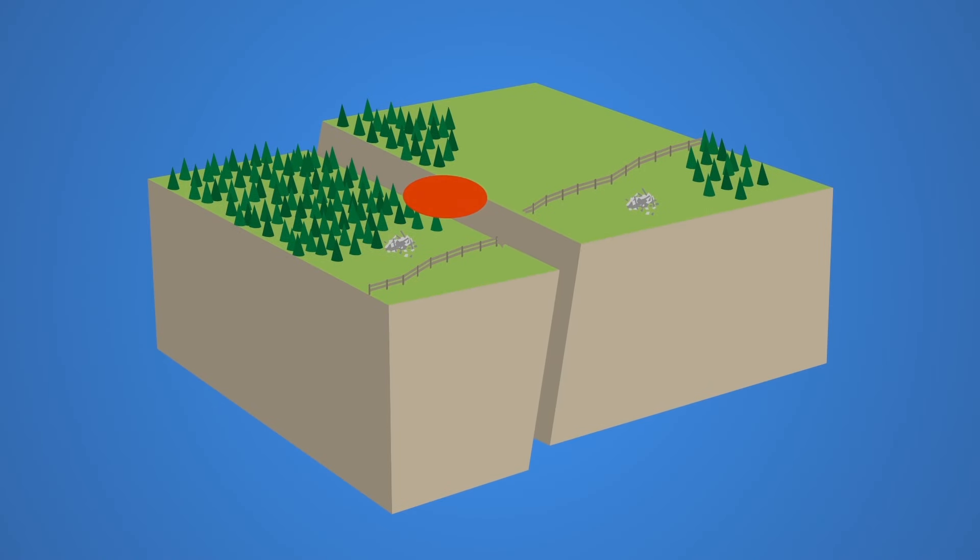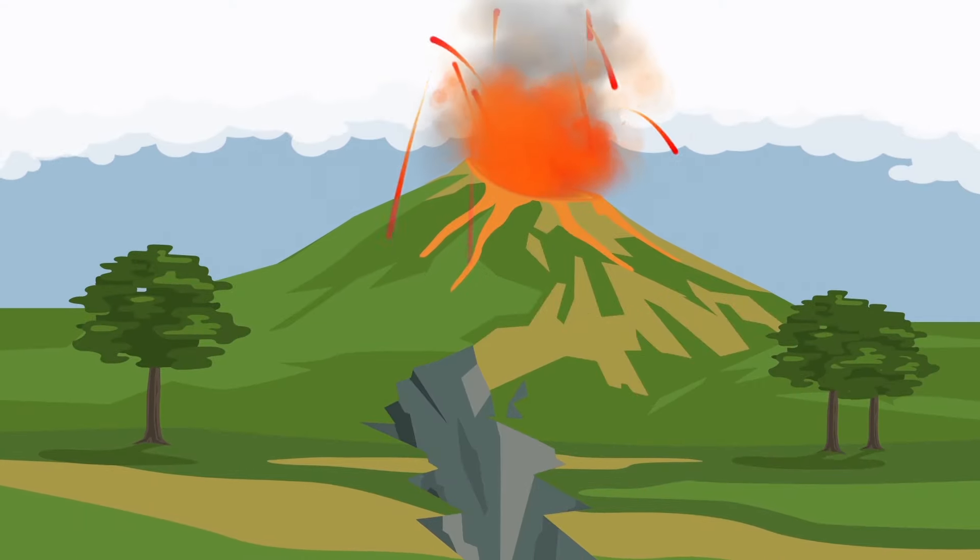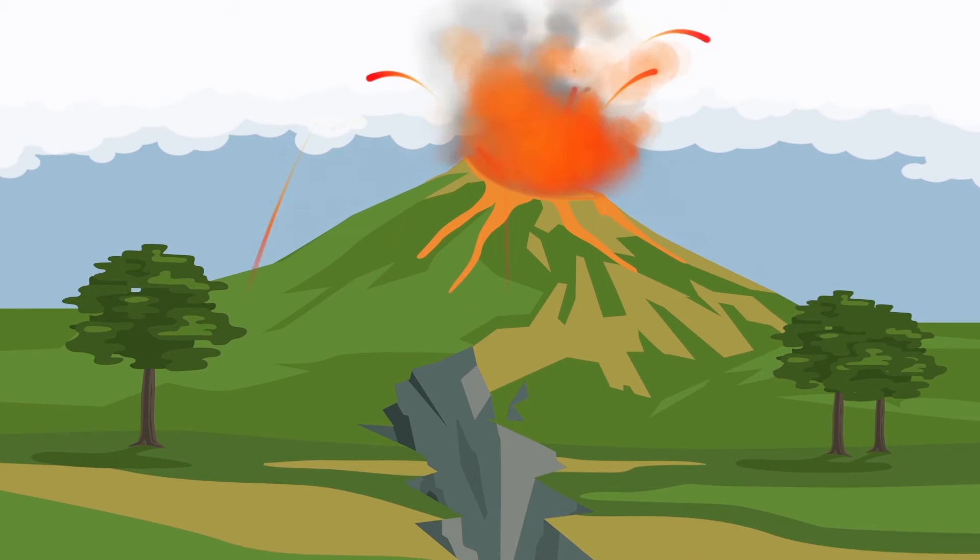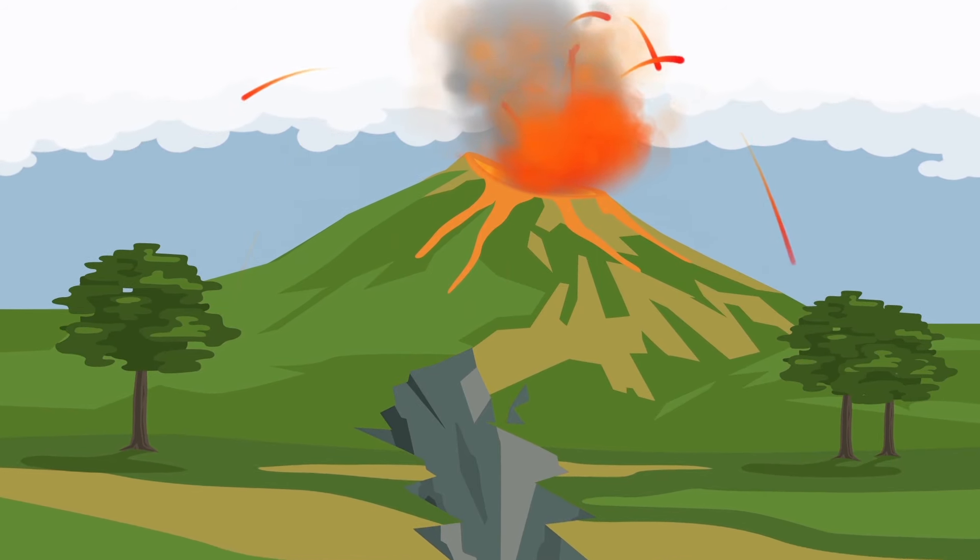The point where the strain is released is called the epicenter. Here the earthquake is the strongest and the shocks spread in all directions from the epicenter. The destructive power of volcanoes and earthquakes is terrifying and fascinating.